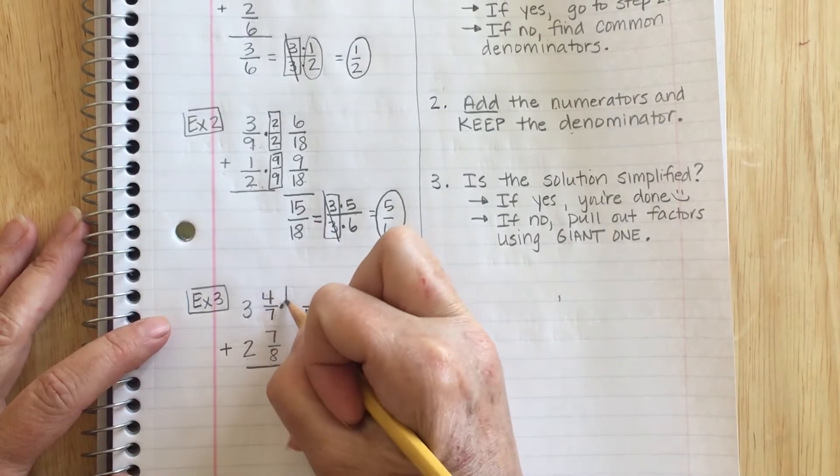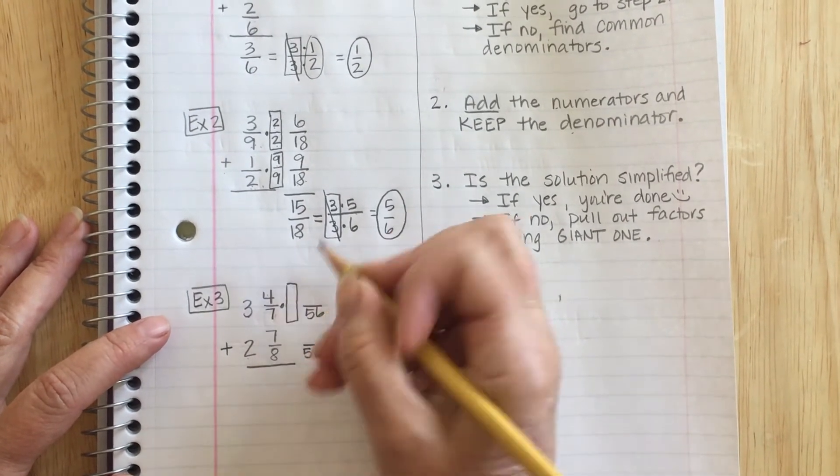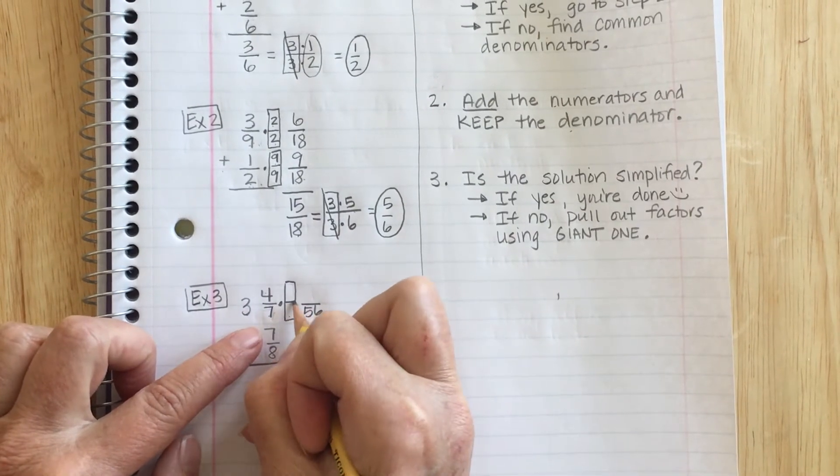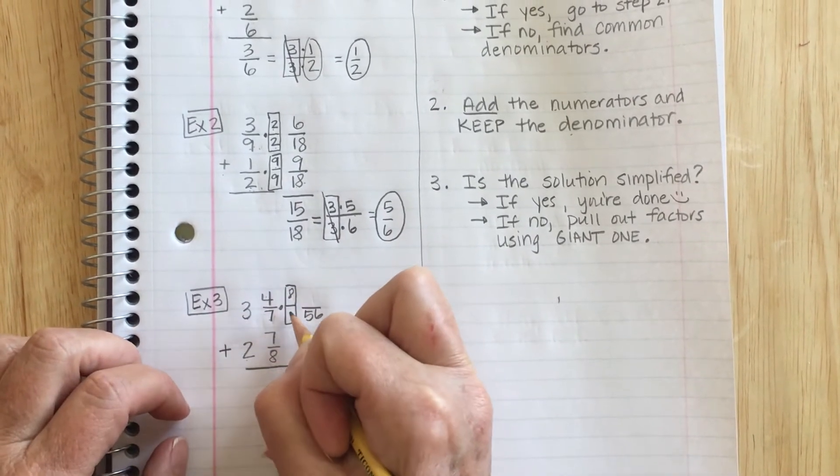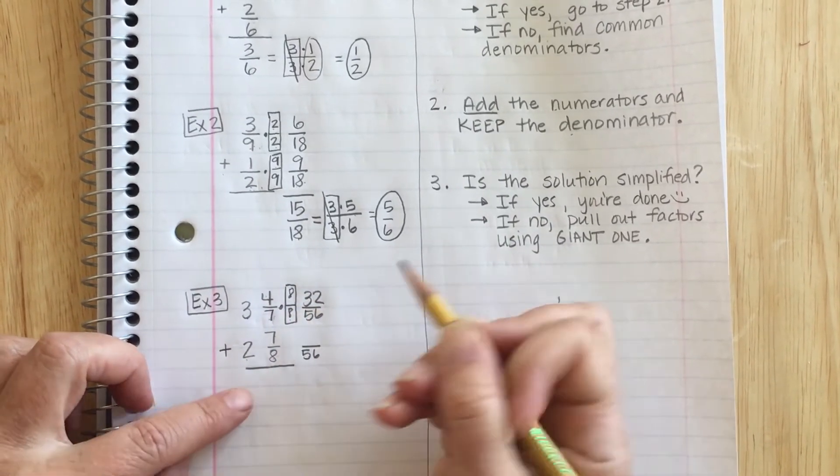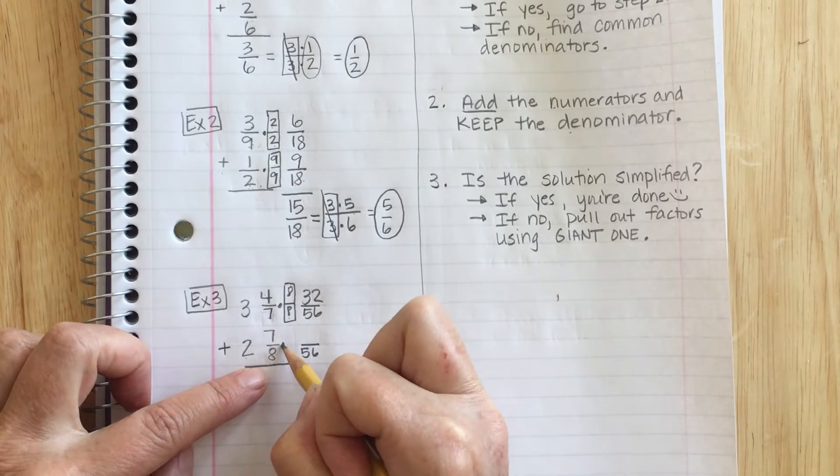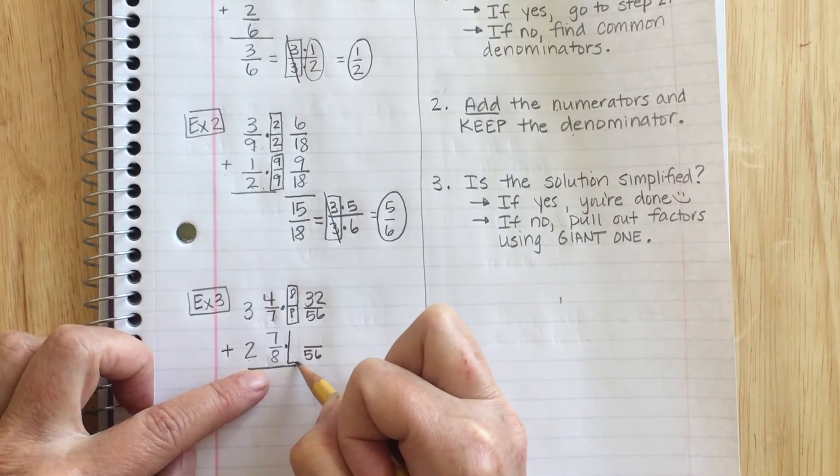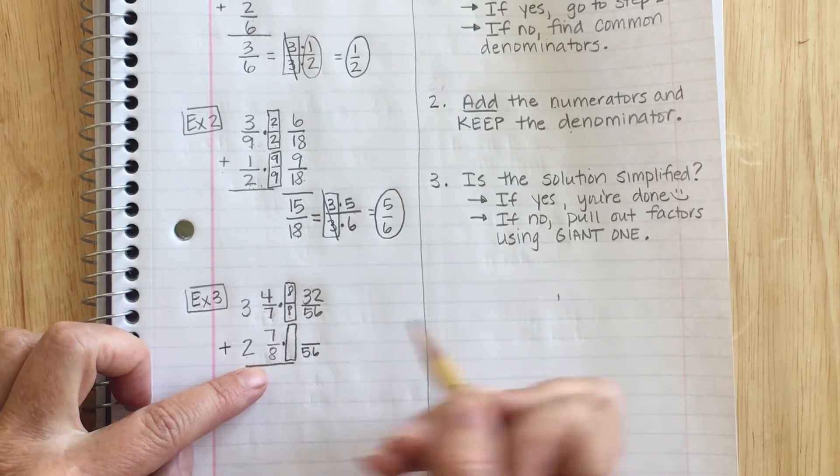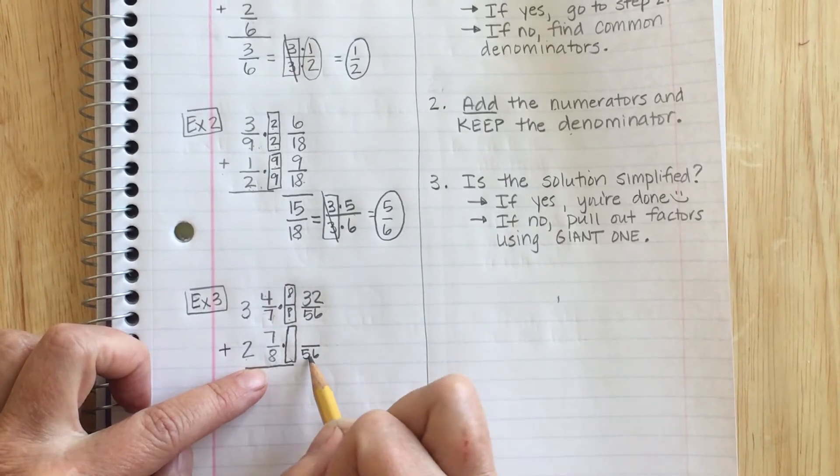So now I just got to think about what giant 1 is going to help me get there. 7 times what is 56? Well, 7 times 8 is 56. So my giant 1 is 8/8. 4 times 8 is 32. Now what does this giant 1 need to be? Well, 8 times what is 56? I know 8 times 7 is 56.